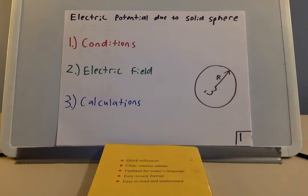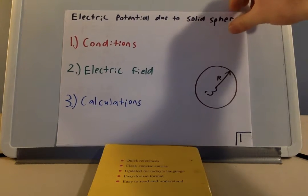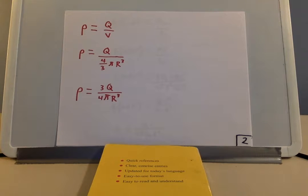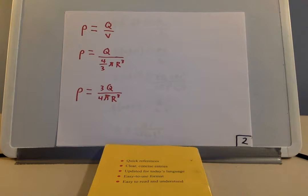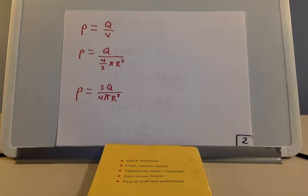I've broken this down to three different sections: first is conditions, second is the electric field, and three is calculations. So first with our conditions: we need to identify that rho, the charge density of the sphere, is equal to q the charge over V the volume. We can substitute in for the volume four-thirds pi R cubed, and simplifying that, rho is equal to three q over four pi R cubed.